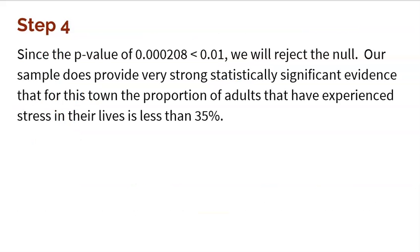The conclusion: since the p-value of 0.000208 is less than 0.01 — our alpha level — we reject the null hypothesis. In context, our sample provides very strong, statistically significant evidence that for David's town, the proportion of adults that have experienced depression is less than 35%. David is right — in his town it is statistically proven that fewer people are depressed.